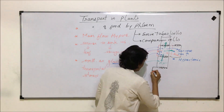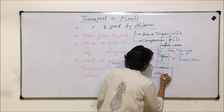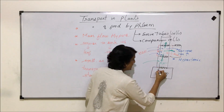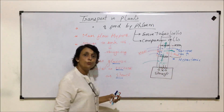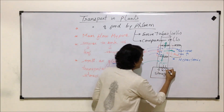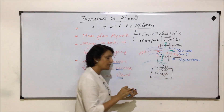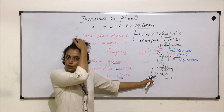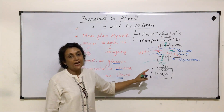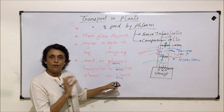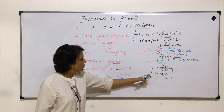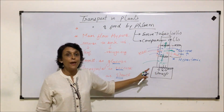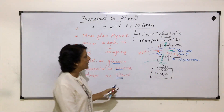Suppose the next tissue is the storage organ. The shift from the sieve tubes to storage organs is with the help of ATP — that means it is an active process. As soon as it comes here it will change into starch. Starch is a polysaccharide and it is insoluble; it remains in the form of grains. So it will not change the tonicity of the structure here, and that is why endosmosis will not take place here.